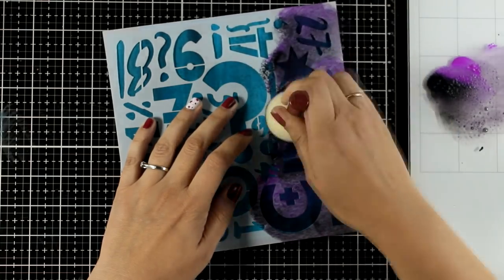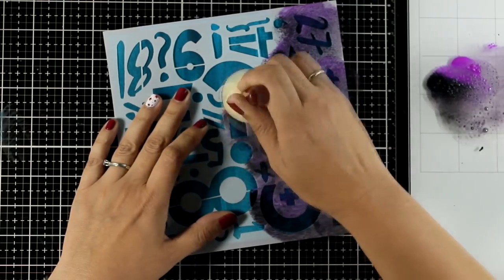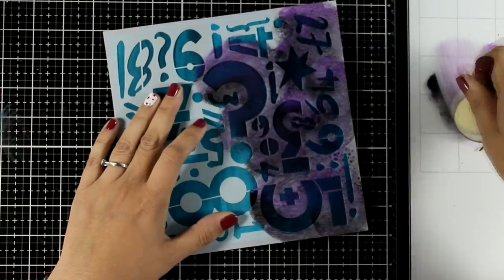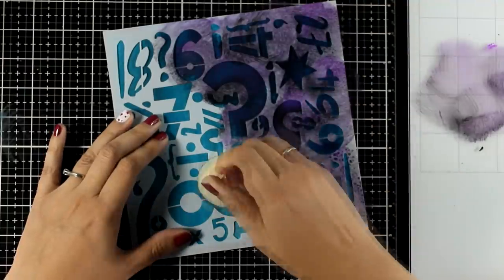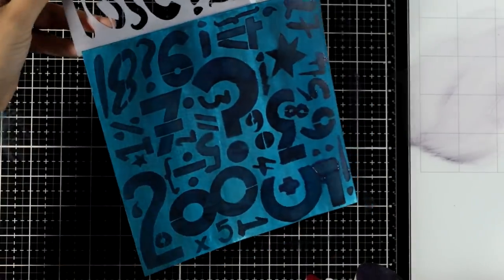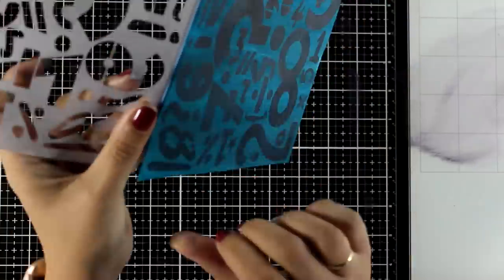Notice that I pick up both colors, purple and black at the same time. So I kind of blending them as I go. I'm going to cover up completely the whole stencil. Let's lift the stencil to see what we have. And isn't that stencil just gorgeous. I absolutely love the numbers. There is another one with letters instead of numbers.